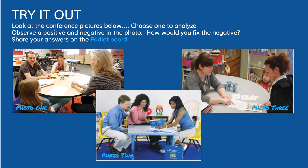Then we're going to do a try-it-out. You've been learning all about conferences from the book and these slides. I want you to look at three pictures — photo one, photo two, and photo three. Choose one of those photos and analyze it for a positive you think is going on in the conference and a negative. Then share how you would improve that negative. Go to Padlet using the link right here and share your answers.